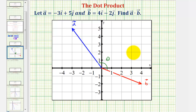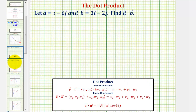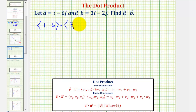Let's take a look at a second example — same question, just different vectors. We have vector a in component form, which would be one comma negative six, dotted with vector b in component form, which would be three comma negative two. So the dot product would be equal to one times three, plus negative six times negative two.